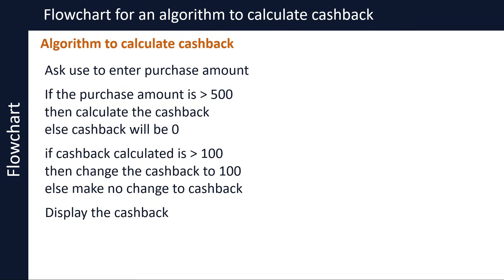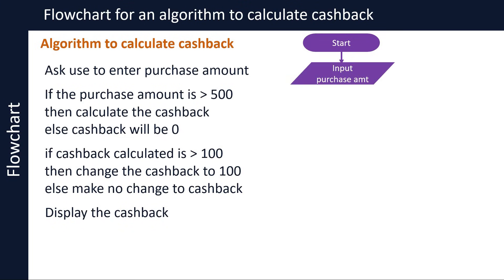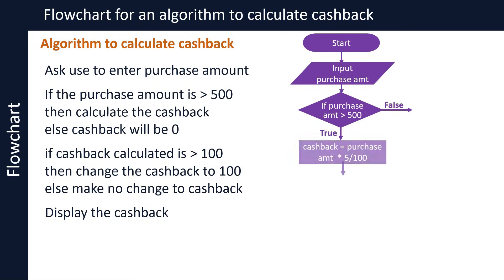Let's draw the flowchart for this algorithm. We draw the start symbol, then an input symbol where we ask the user to enter the purchase amount, storing it in a variable named PurchaseAMT. We draw a decision symbol to check if the value in PurchaseAMT is greater than £500, using the relational operator greater than. If true, we follow the TRUE path and calculate 5% cashback by multiplying PurchaseAmount by 5 and dividing by 100, shown by a process symbol. If false, we follow the FALSE path and set cashback to 0, shown by another process symbol.